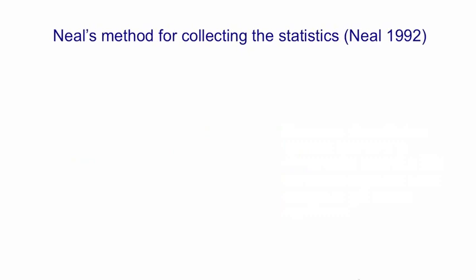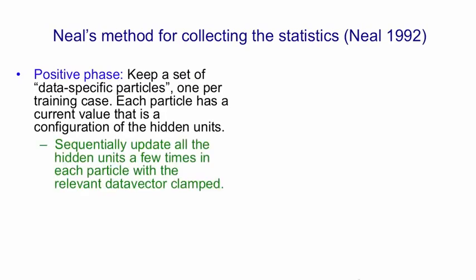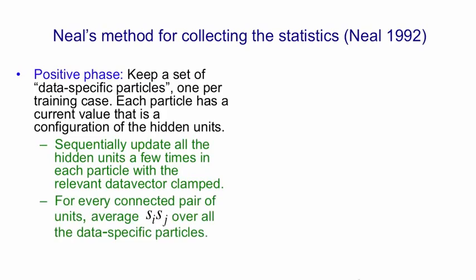Here's the method for collecting statistics introduced by Radford Neal in 1992. In the positive phase, you have a set of data-specific particles — one or a few per training case — and each particle has a current value that's the configuration of the hidden units plus which data vector it goes with. You sequentially update all the hidden units a few times in each particle with the relevant data vector clamped. Then for every connected pair of units, you average the probability of the two units being on over all these particles.